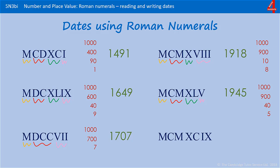Final number — 1000. Again, we have a C in front of an M, so that's 900. Then we have a 10, but it's in front of 100, so that's 90. And then we have a 1, but it's in front of a 10, so that's 9. The year is 1999 — the year we commonly think of as the end of the 20th century.